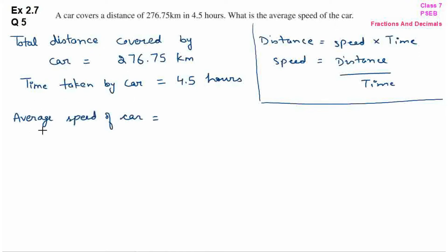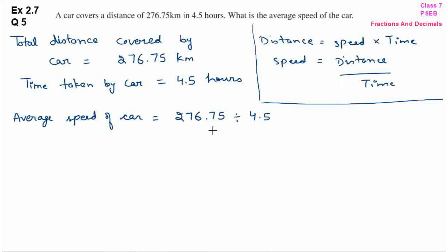Average speed of car is equal to distance divided by time. Distance here is 276.75, divided by time which is 4.5. Now let us solve this.